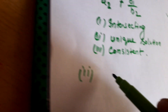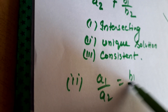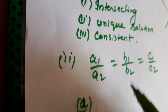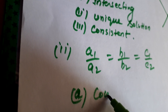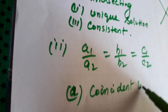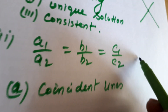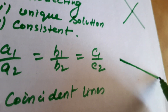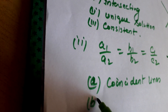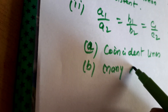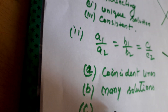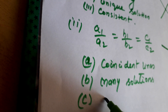Now, if the condition is a1 upon a2 equal to b1 upon b2 equal to c1 upon c2, then the graph of these equations will be coincident — one graph lies on the same line as the other. They will have many solutions, and since they have many solutions, they are consistent.